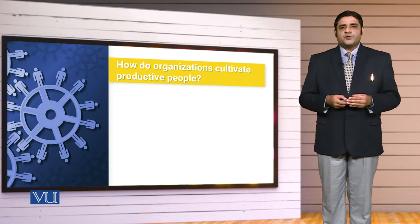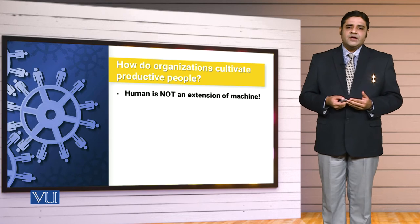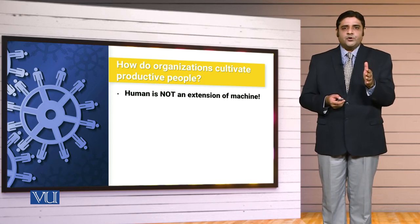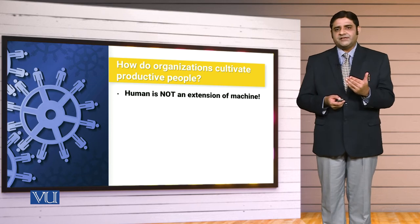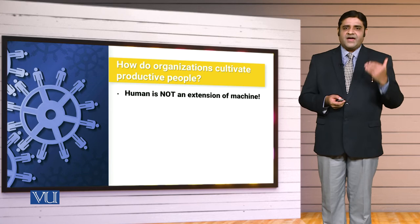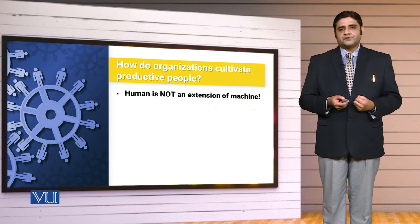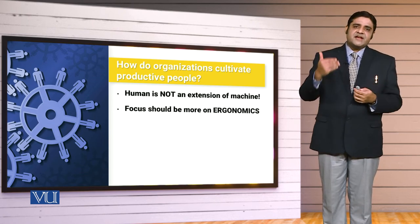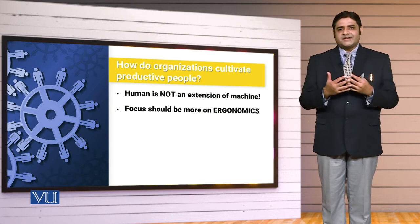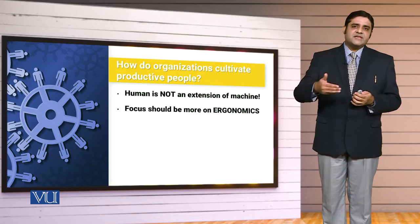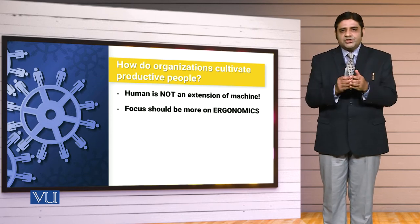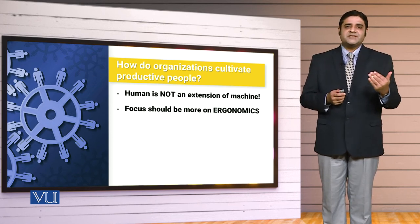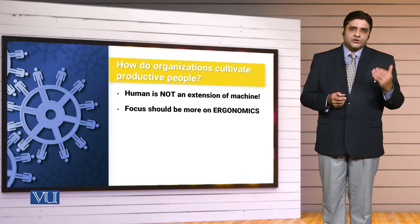How do organizations cultivate productive people? In the context of total leadership, human is not an extension of machine — human entity will be counted as a separate entity. In the systems approach, when we say a human is a component in the system, we ignore their softer aspects and their value system. A human has values and a full psychological context that is necessary to understand. When a human interacts with a system, we have to see what ergonomical aspects are needed to achieve job satisfaction, job involvement, and job productivity — so human-environment interaction needs to be made more comfortable.